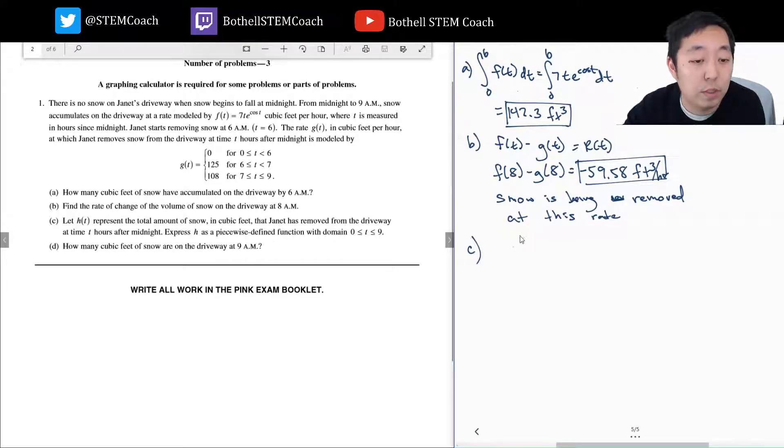Let h(t) represent the total amount of snow in cubic feet that Janet has removed from the driveway at time t hours after midnight. Express h as a piecewise defined function with domain 0 to 9. So h(t) is simply the integral from 0 to t of g(x) dx, because what we're going to do is accumulate. She's been removing this at a constant rate. Between 0 and 6, she hasn't removed any snow, so it's definitely 0 for t less than 6.